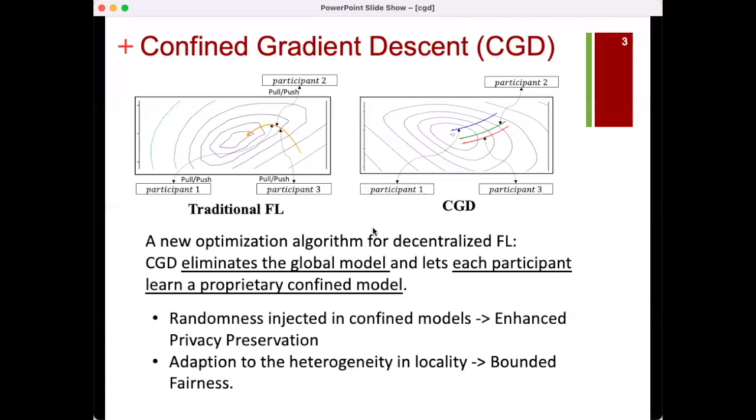By eliminating the global model and allowing each participant to learn its own confined model independently, CGD significantly reduces information leakage and adapts better to its local heterogeneity, thereby promoting fairness.